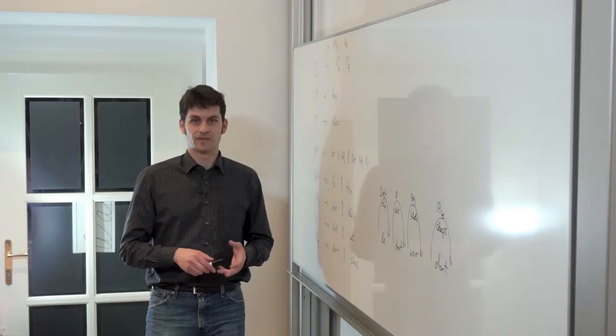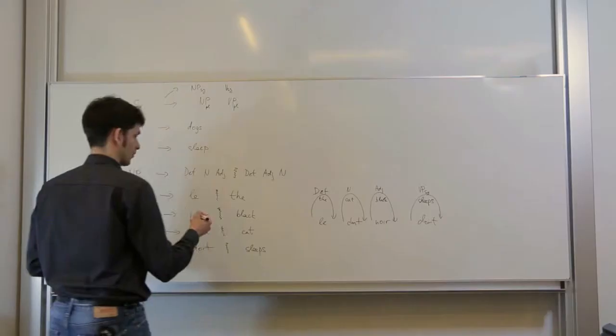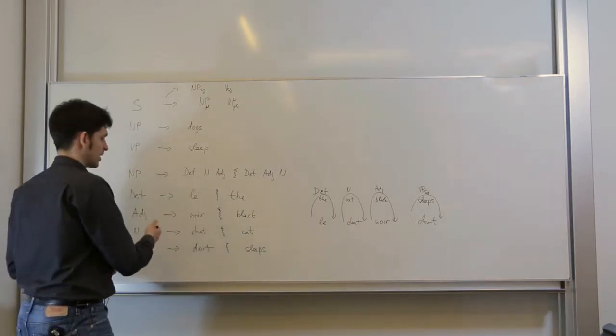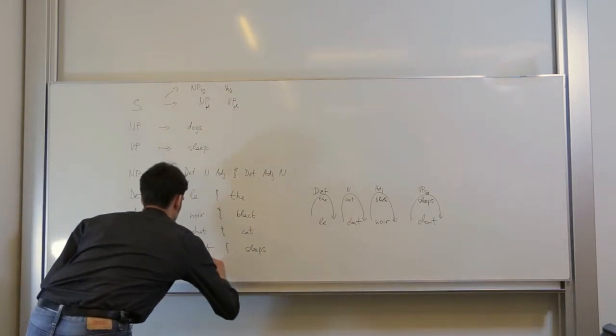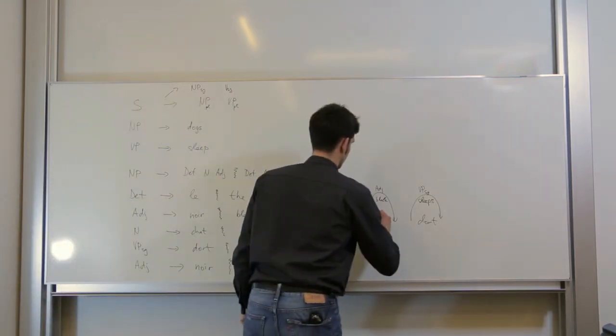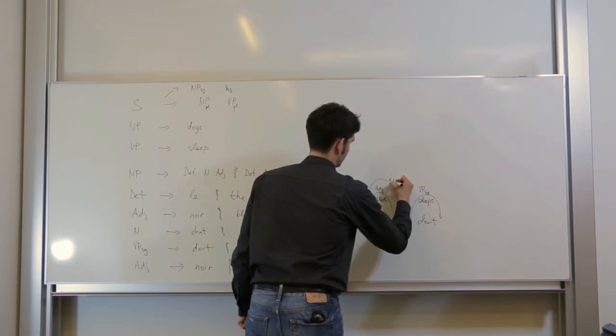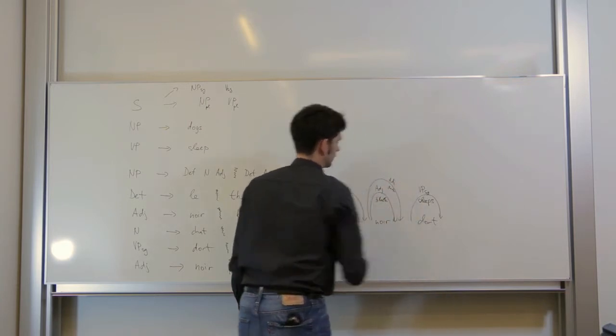Obviously there can be other English words to translate the same French words. So for example this noir can be also dark. And that would be captured in a separate rule in the grammar. This additional rule then licenses one word derivation for the noir. So this noir can be also an adjective, now translated as dark.